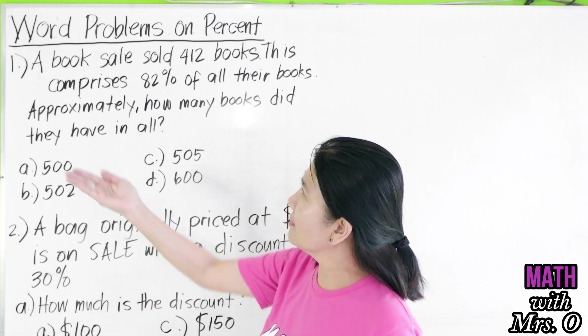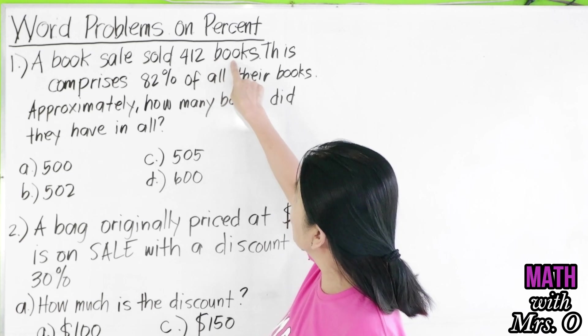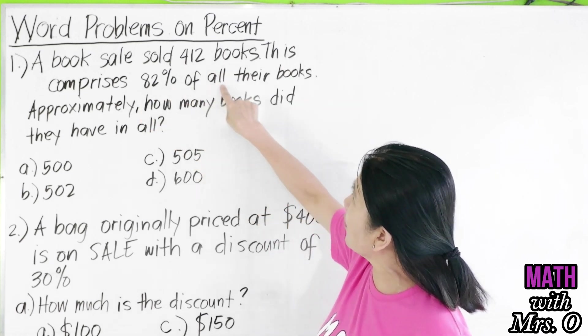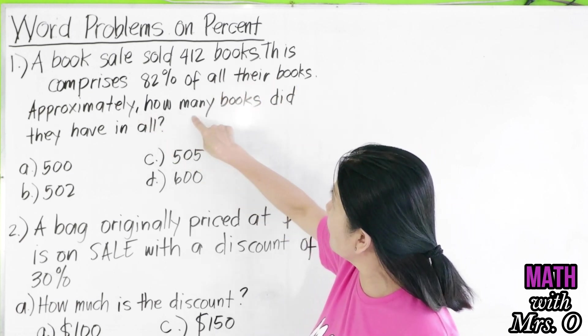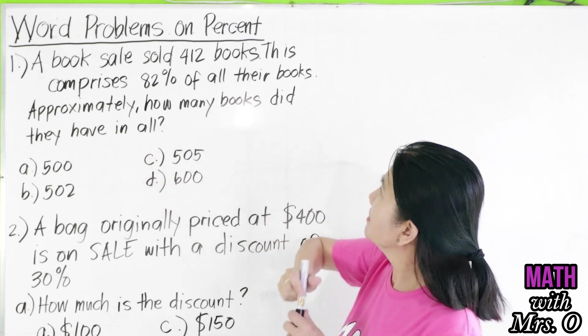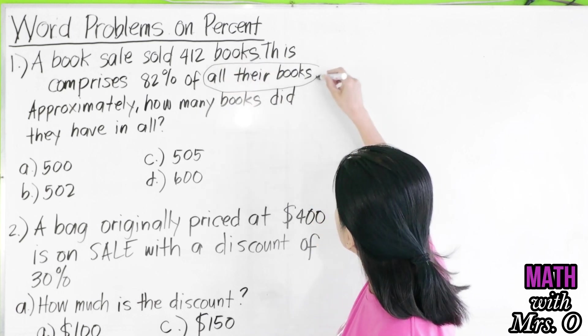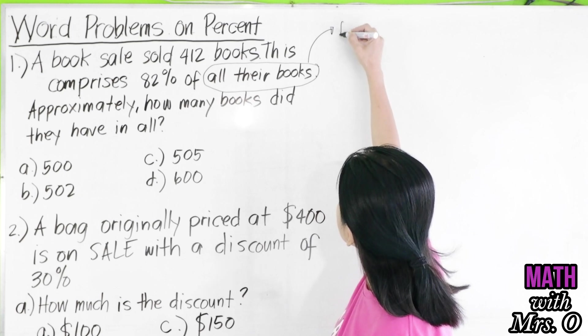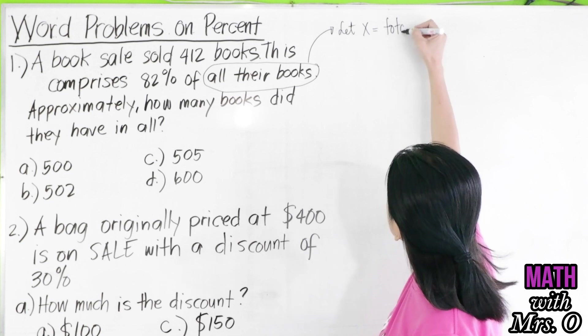First problem is, a book sale sold 412 books. This comprises 82% of all their books. Approximately, how many books did they have in all? So, we let X be all their books. We let this be our X, total number of books.